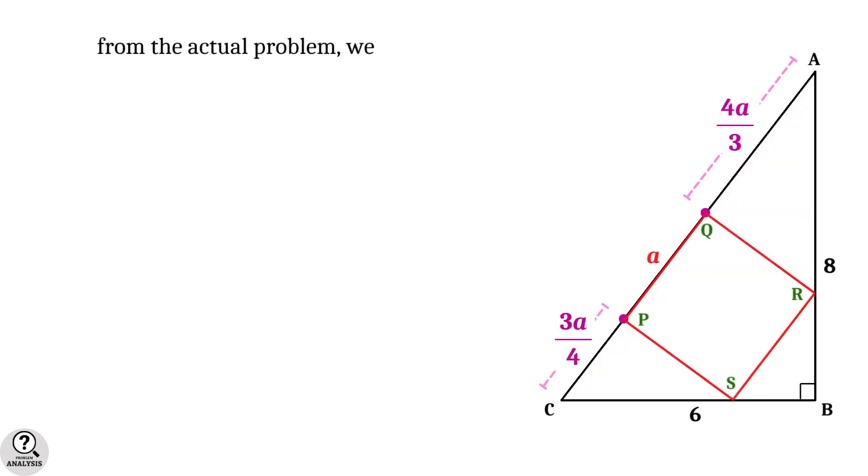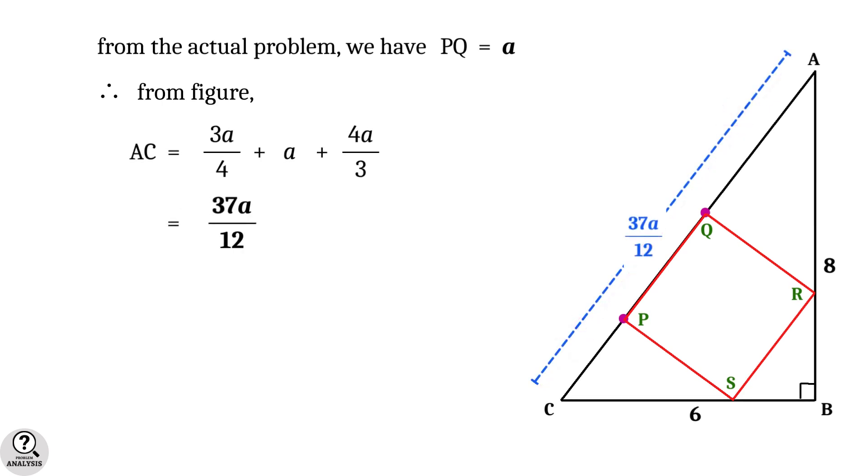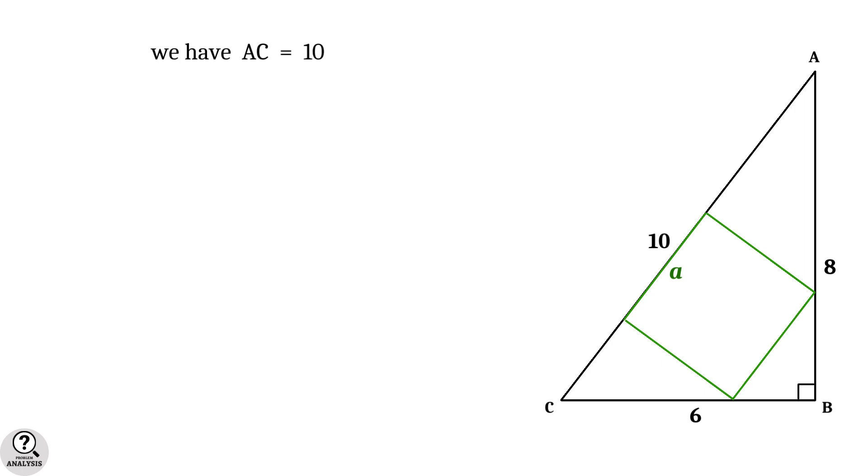From the actual problem, we already have PQ equal to a. Therefore, from the figure, we will get the side AC equal to 3a by 4 plus a plus 4a by 3, that is equal to 37a by 12. But in the problem, it is given that AC equals 10 units. Therefore, 37a by 12 equals 10, which gives a equal to 120 by 37, approximately equal to 3.243 units.